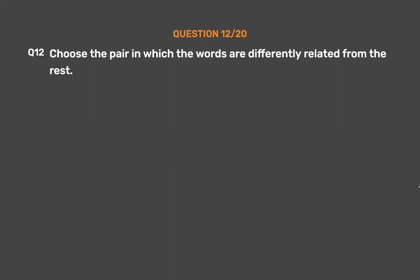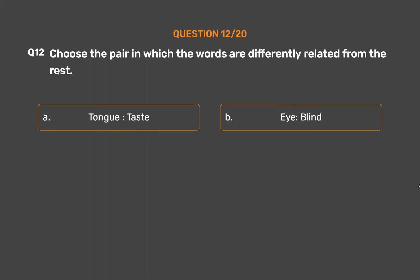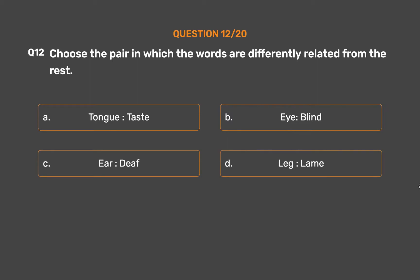Question number 12. Choose the pair in which the words are differently related from the rest. Option A: Tongue, Taste. Option B: Eye, Blind. Option C: Ear, Deaf. Option D: Leg, Lame.